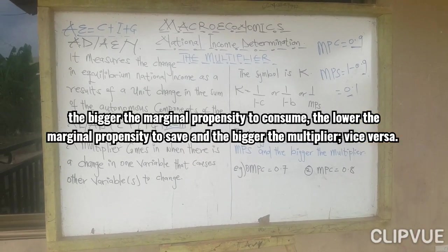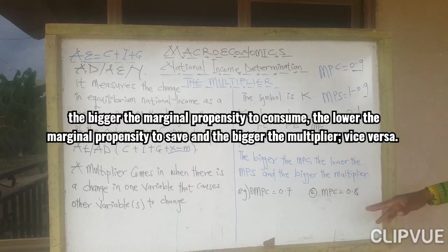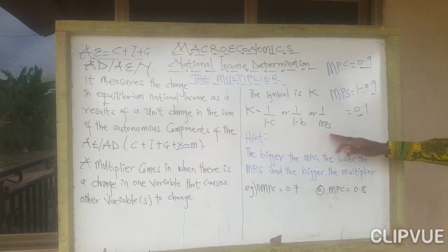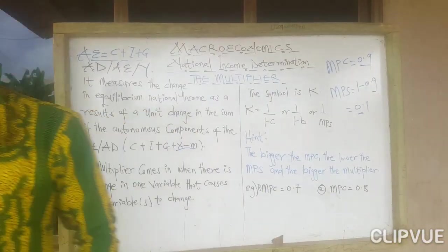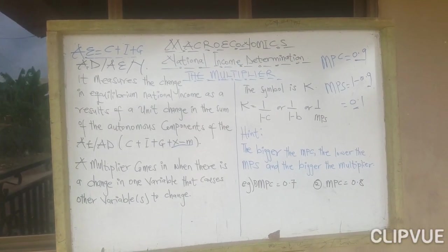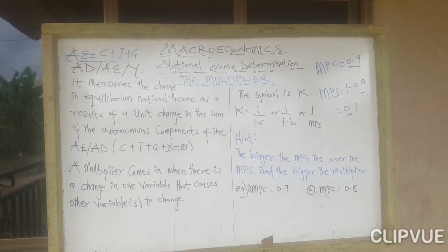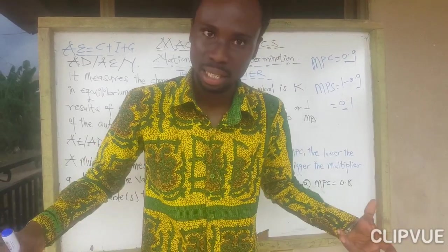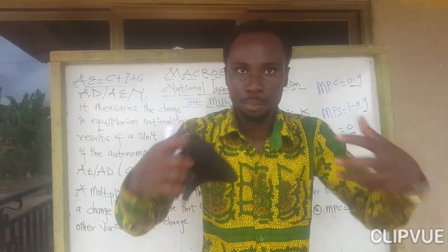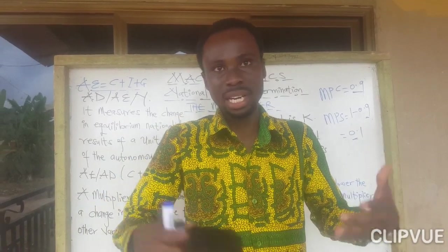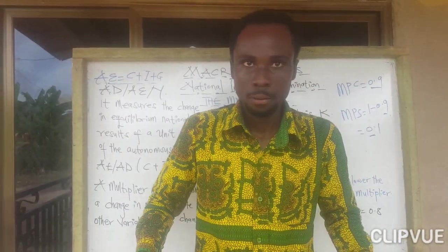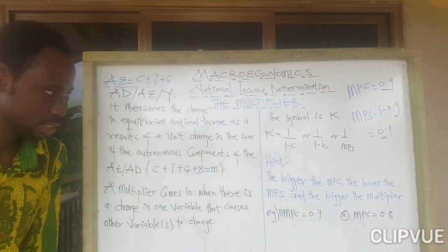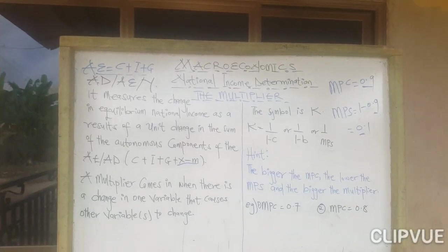The bigger the MPC, the lower the MPS, and therefore the bigger the multiplier. When the MPS is small, we get a bigger multiplier. When the MPS is big, we get a smaller multiplier.